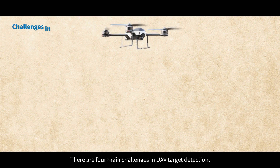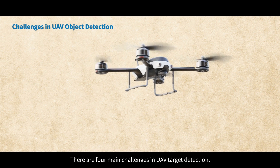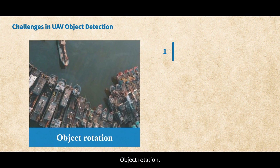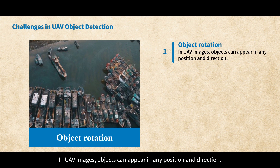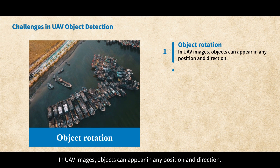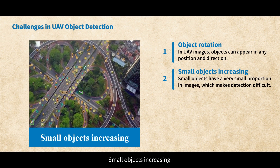Part 2: UAV Object Detection Method. There are four main challenges in UAV target detection. Object Rotation: in UAV images, objects can appear in any position and direction. Small objects increasing: